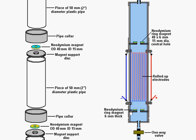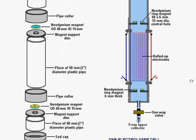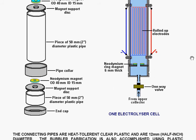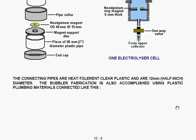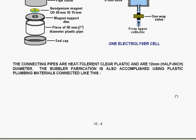And then you can see the support disc for the neodymium magnet. This one has the north pole facing upwards. This one has the north pole facing downwards. And those poles help considerably in increasing the output of HHO gas. There is again a one-way valve and the supply pipe which comes from the upper collector. The connecting pipes are heat tolerant, clear plastic, 12 mm or half inch diameter.